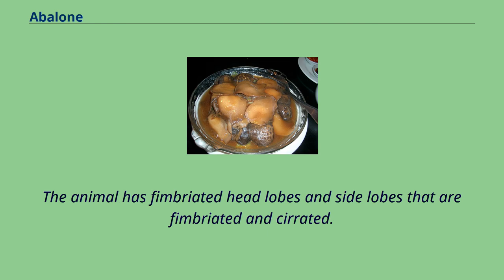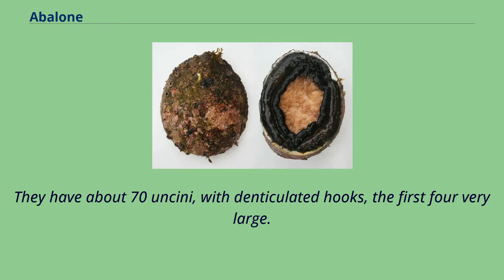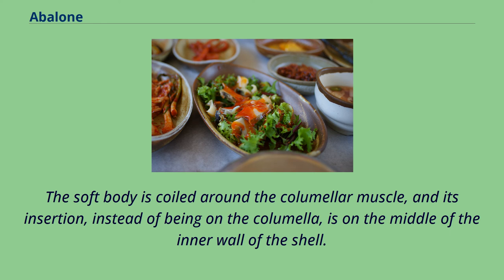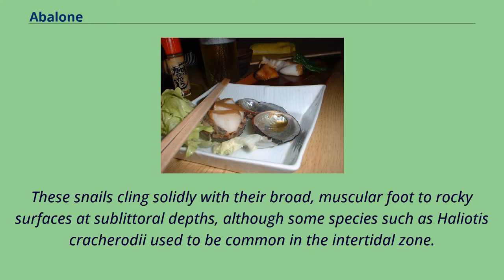The animal has fimbriated head lobes and side lobes that are fimbriated and seriated. The radula has small median teeth, and the lateral teeth are single and beam-like. They have about 70 uncini with denticulated hooks, the first four very large. The rounded foot is very large in comparison to most mollusks. The soft body is coiled around the columella muscle, and its insertion, instead of being on the columella, is on the middle of the inner wall of the shell. The gills are symmetrical and both well-developed. These snails cling solidly with their broad, muscular foot to rocky surfaces at sublitoral depths, although some species such as Haliotus coccoradiata used to be common in the intertidal zone.